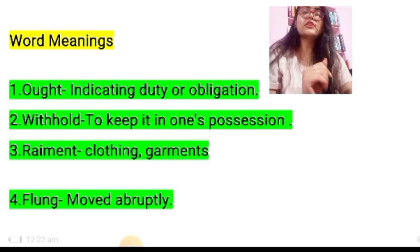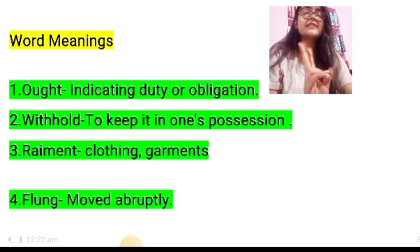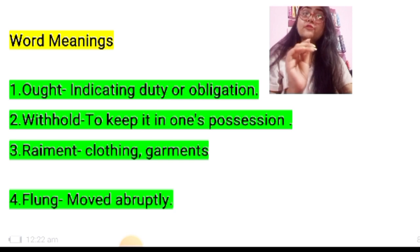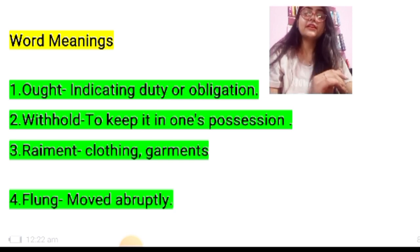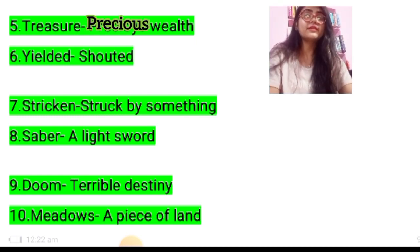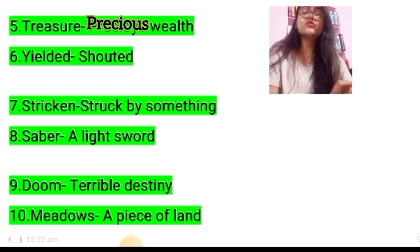First: aught — indicating duty or obligation. Second: withhold — to keep it in one's possession. Third: raiment — clothing, garments. Fourth: flung — the past form of fling, meaning moved abruptly. Fifth: treasure — precious wealth. Sixth: yielded — shouted. Seventh: stricken — struck by something.